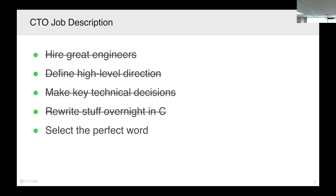I've been a CTO on and off for about 11 years. My background involves a lot of three-person and five-person companies. We just broke 150 as a company; our engineering team is between 50 and 60. Going through that scaling process basically means that every day I'm completely inexperienced to do my job, which is awesome. This is my bucket list of things you should be doing as a CTO: hiring great engineers, defining high-level direction, making important technical decisions, pulling crazy all-nighters to rewrite hard parts of your code in C. Picking words never really seemed like it was going to make the list.